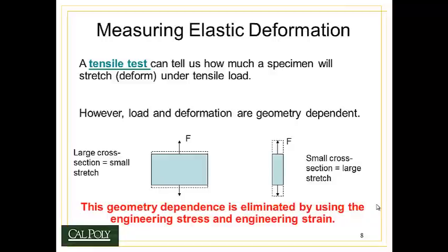There's this thing called a tensile test which can tell us how much a specimen will stretch or deform under an applied tensile load. But load and deformation are geometry dependent. For example, if I had a very fat, large cross-sectional area and applied a force F, I'd get a small deflection. But if I had a very small cross-sectional area and applied the same load F, I'd get a much larger deflection. You can practice it at home by simply taking something large and soft and stretching it, and you'll notice it deflects much less than if you took a smaller object of the same type of material.